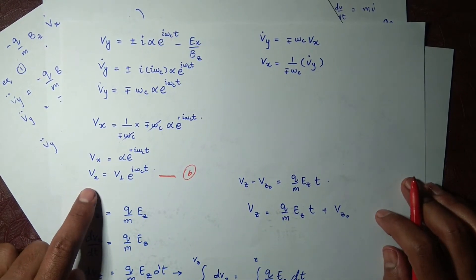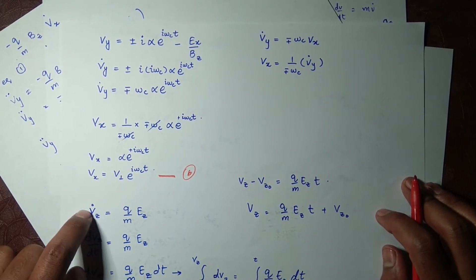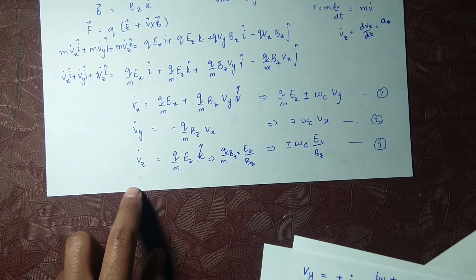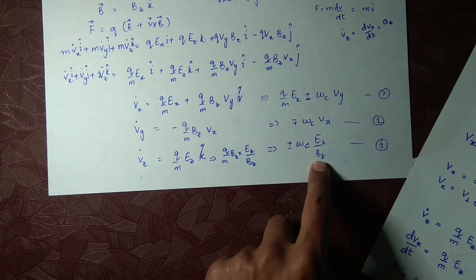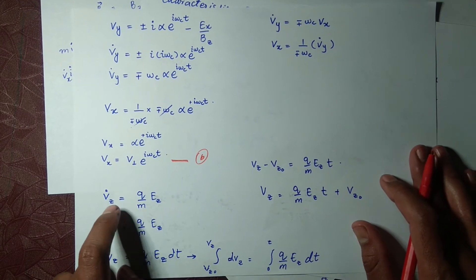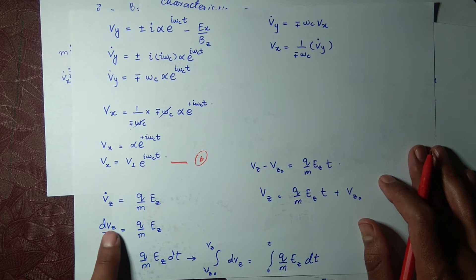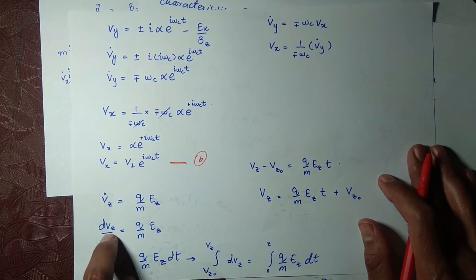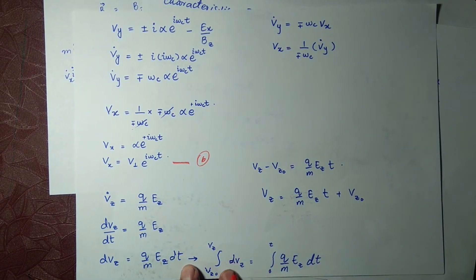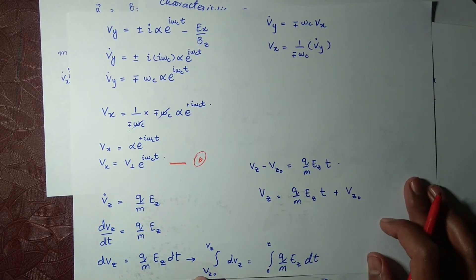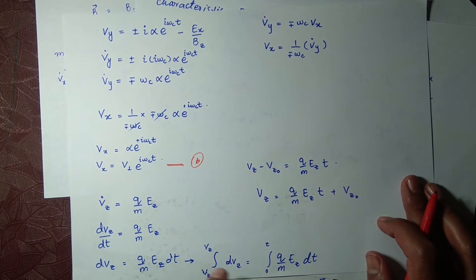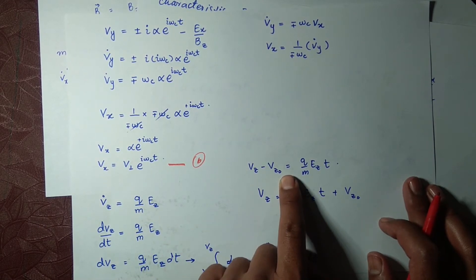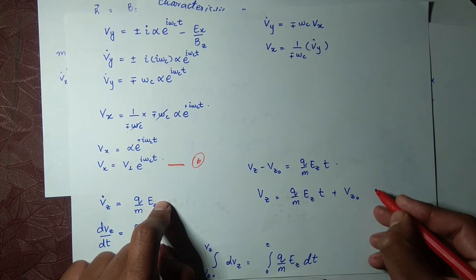Now we have to find v_z. For v_z we go back to equation number three. Equation number three is written here, and we write v_z dot as dv_z/dt. When we take the integral of this equation, integrating from v_z naught at t equals zero up to v_z at time t, we get the value of v_z.